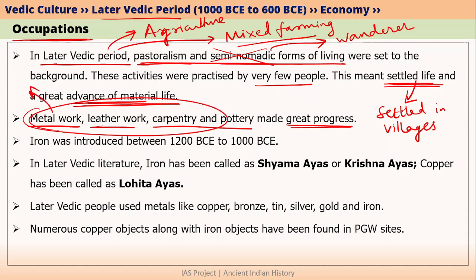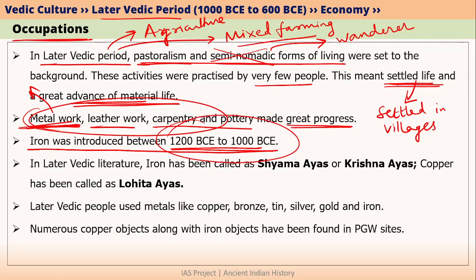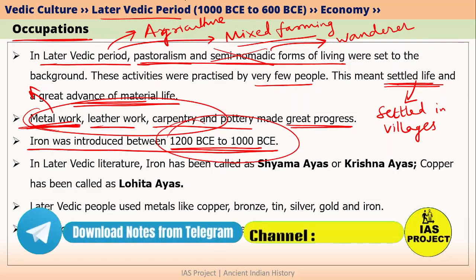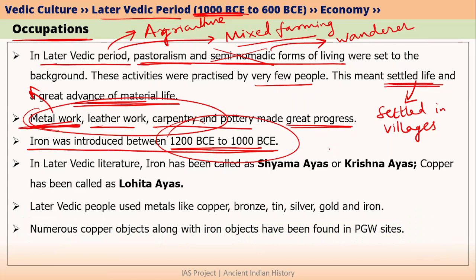In the early Vedic period, only copper, bronze, and some amount of tin were being used. However, in the later Vedic period, the highest importance was given to iron. Iron was probably introduced somewhere around 1200 BCE to 1000 BCE — though this date differs across books. What you need to understand is that iron started to be used in India just before the later Vedic period began, around 1000 BCE. Some books say iron started to be used around 1400 BCE, but we associate the usage of iron with the later Vedic period.